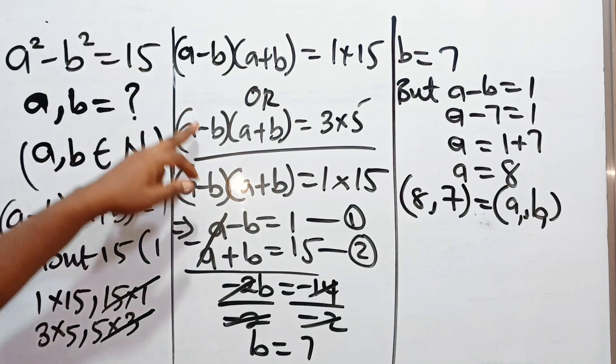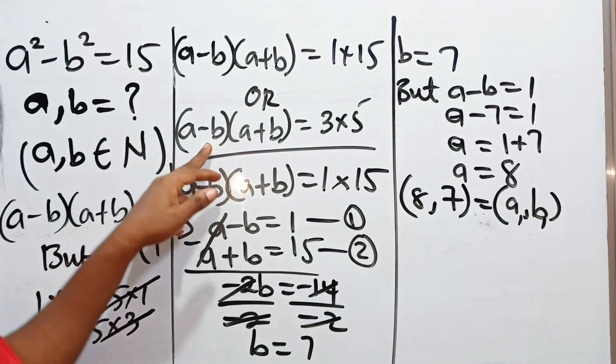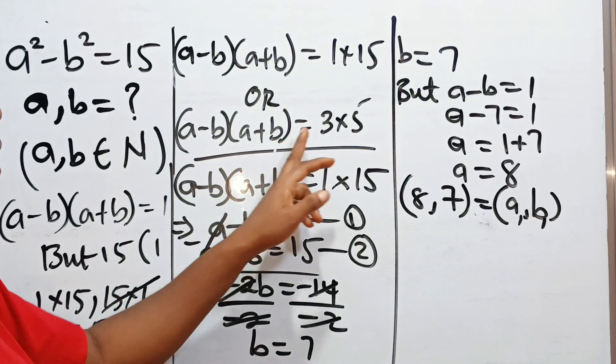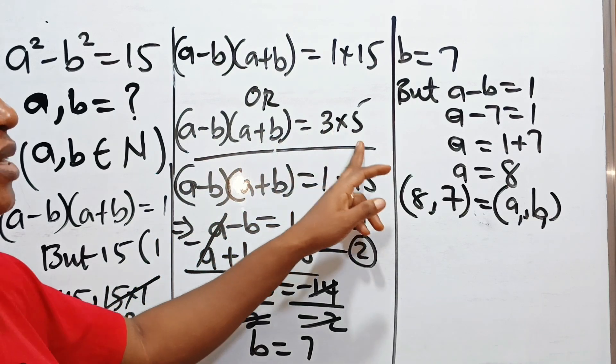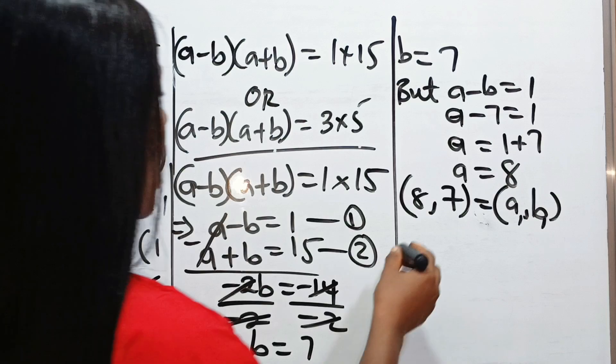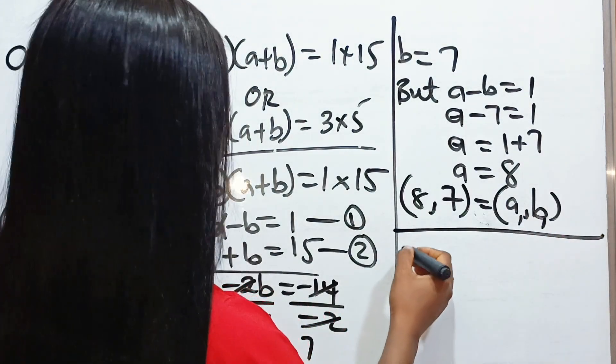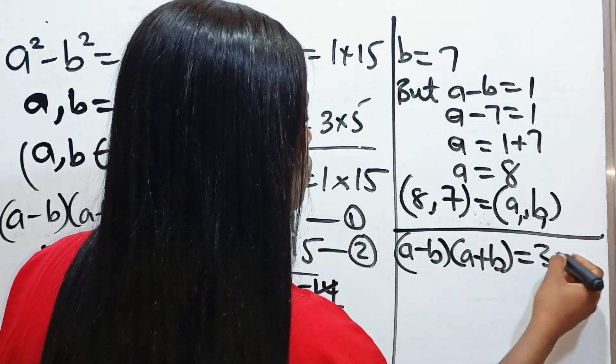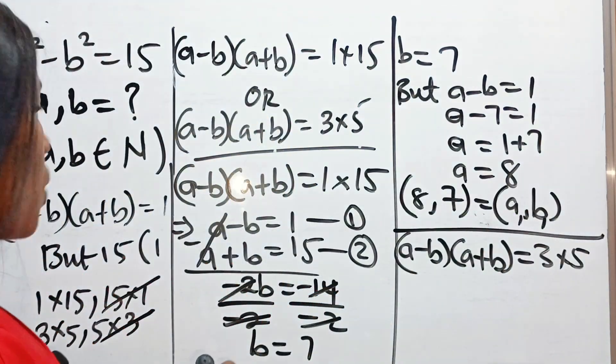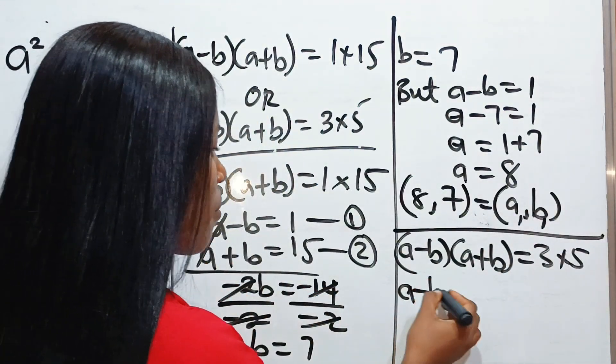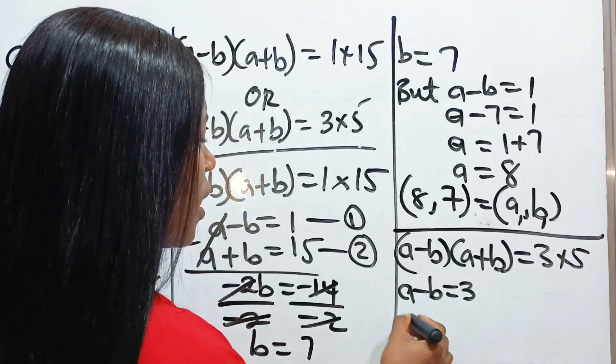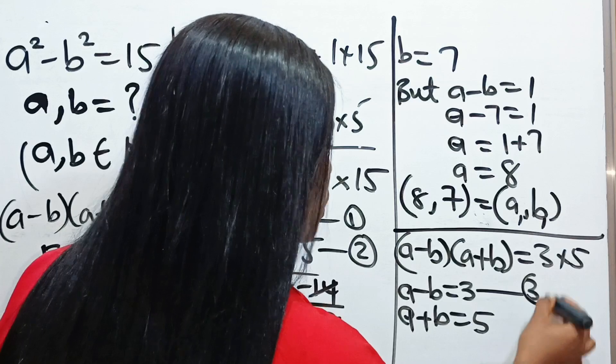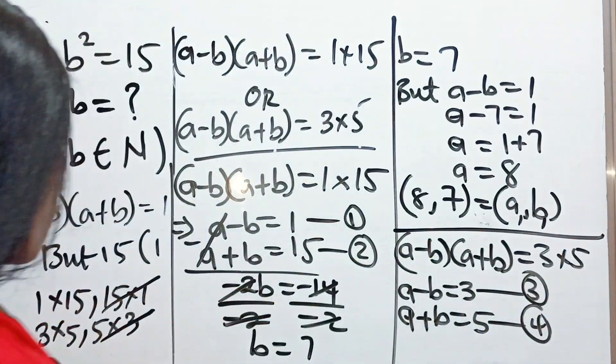Let us check. Remember that we also have another situation here, whereby a minus b multiplied by a plus b is equal to 3 times 5. When a minus b multiplied by a plus b is equal to 3 multiplied by 5, we can write that a minus b is equal to 3 and a plus b is equal to 5. Let's call this equation 3 and equation 4.